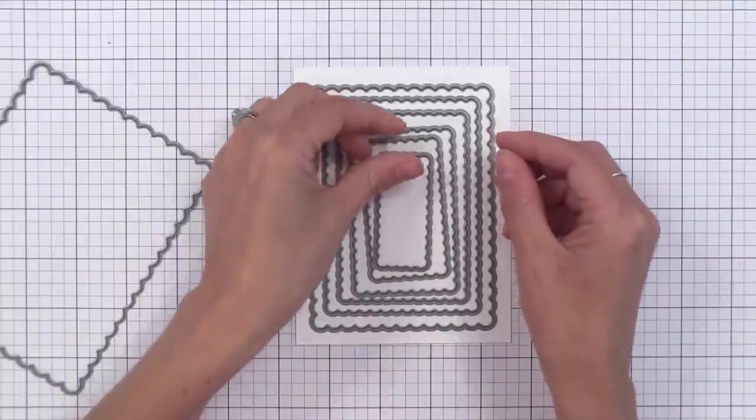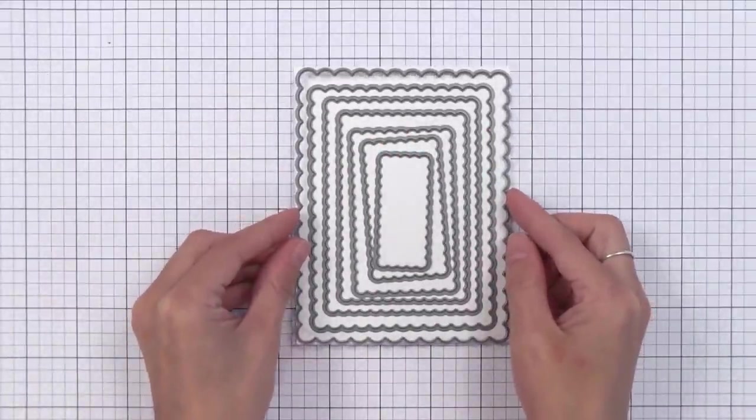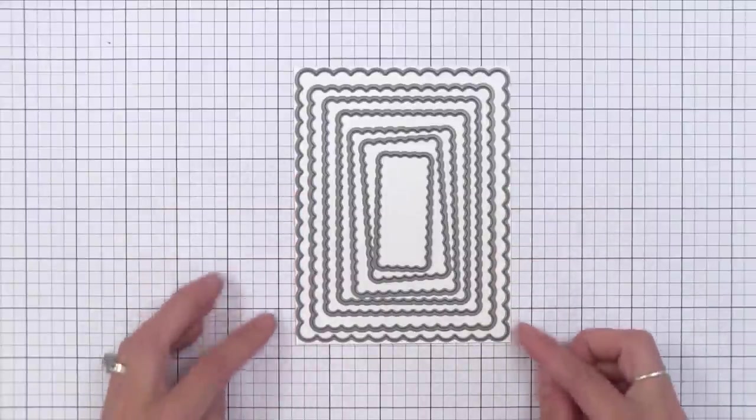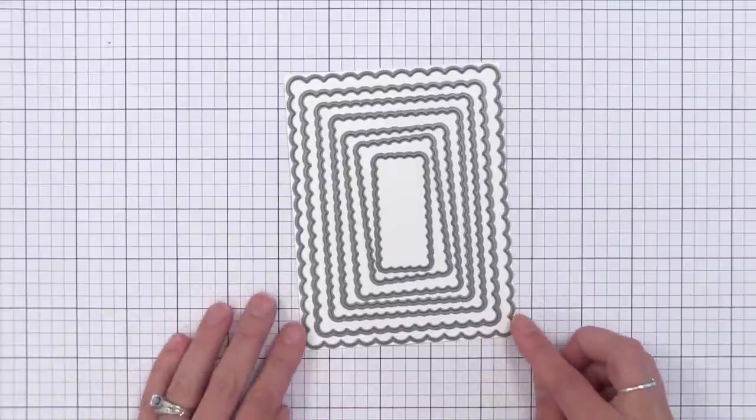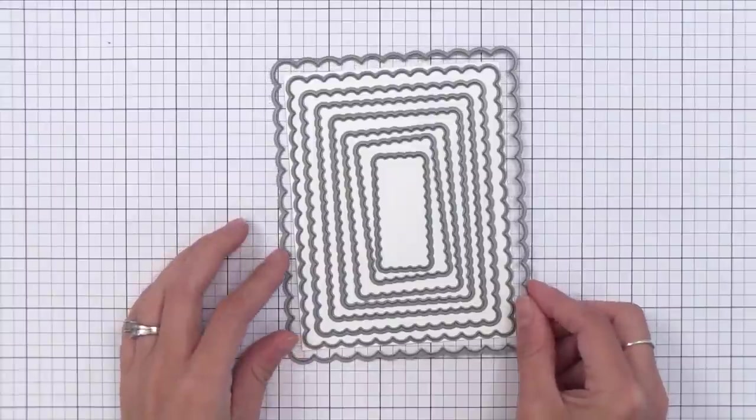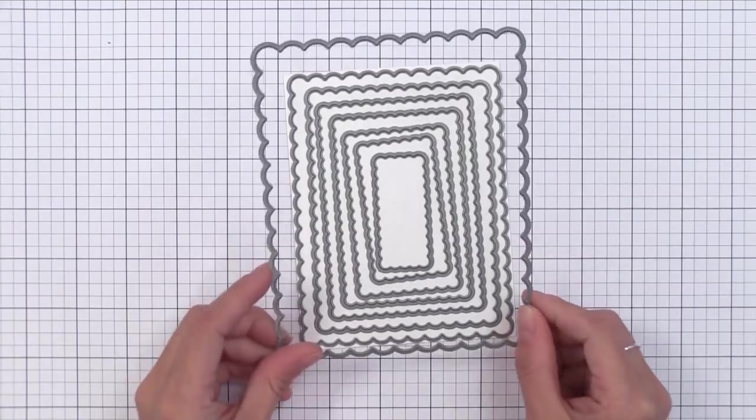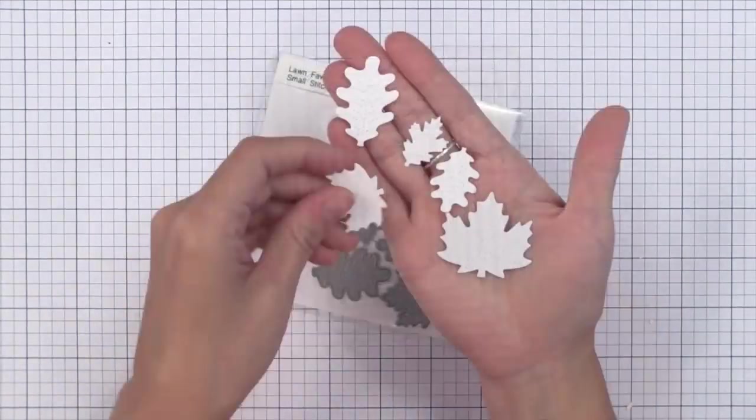Then there is a larger die that actually cuts a four and a quarter by five and a half inch piece. So you could actually have a scalloped edge note card if you wanted to. And then the die set actually has one scalloped frame that's even bigger than that one. So if you're one of those people who likes to make five by seven cards, this one would fit nicely on top of that too. You could even die cut one of the large scalloped rectangles, fold it in half and have the perfect place card for holiday tables.